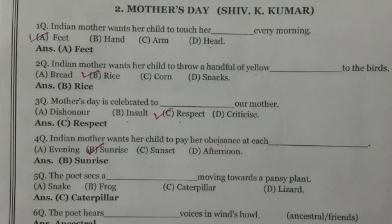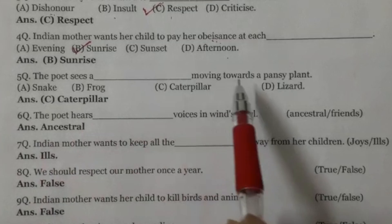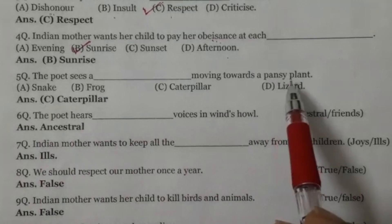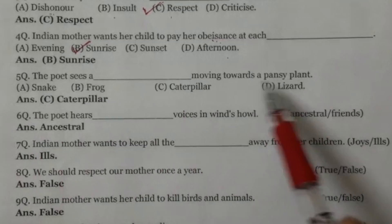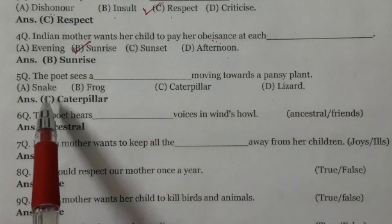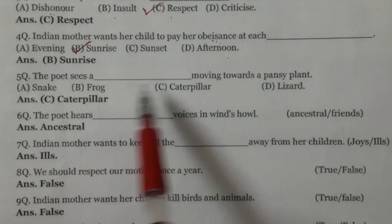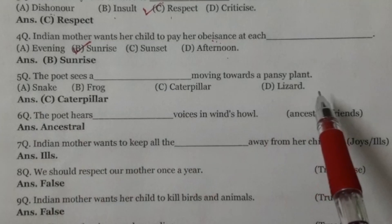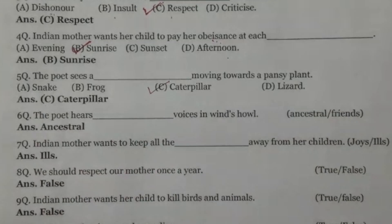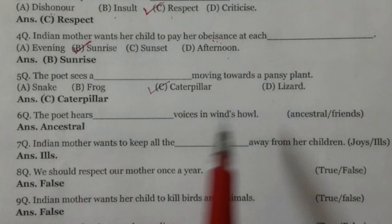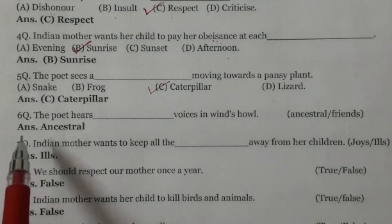Question number 5: The poet sees a dash moving towards a pansy plant. Poet pansy plant val kisnun jande hoye dekhda hai? Four options: snake, frog, caterpillar, lizard. The right option is caterpillar — wo caterpillar nu pansy de plant val jande hoye dekhda hai.